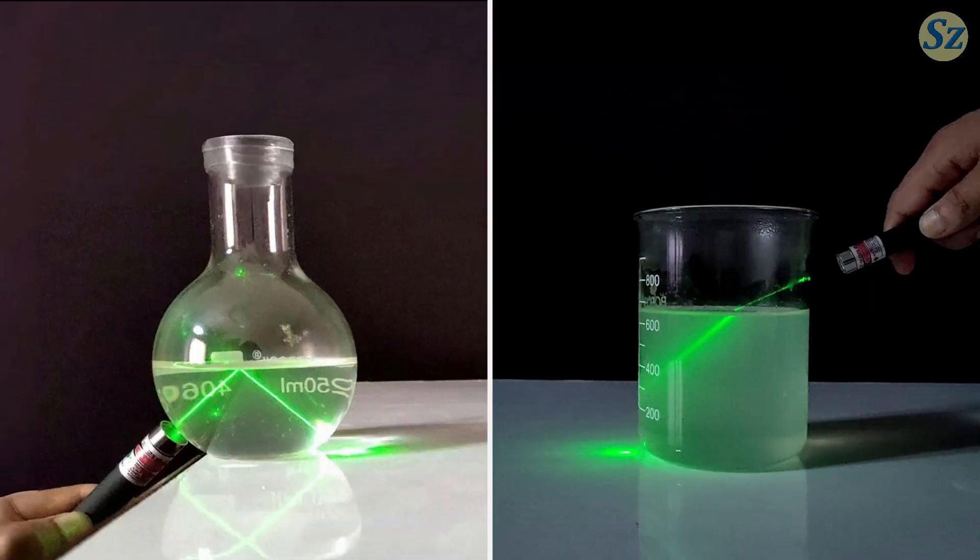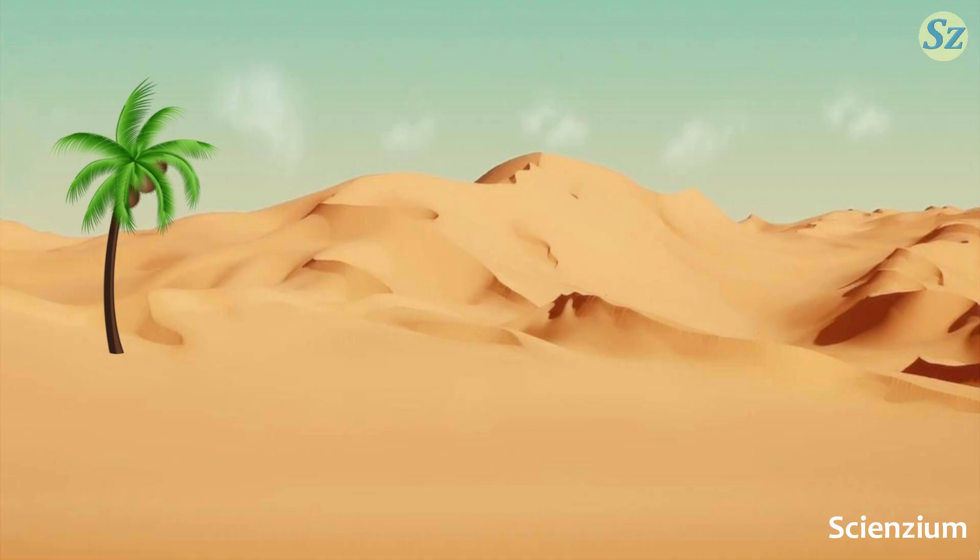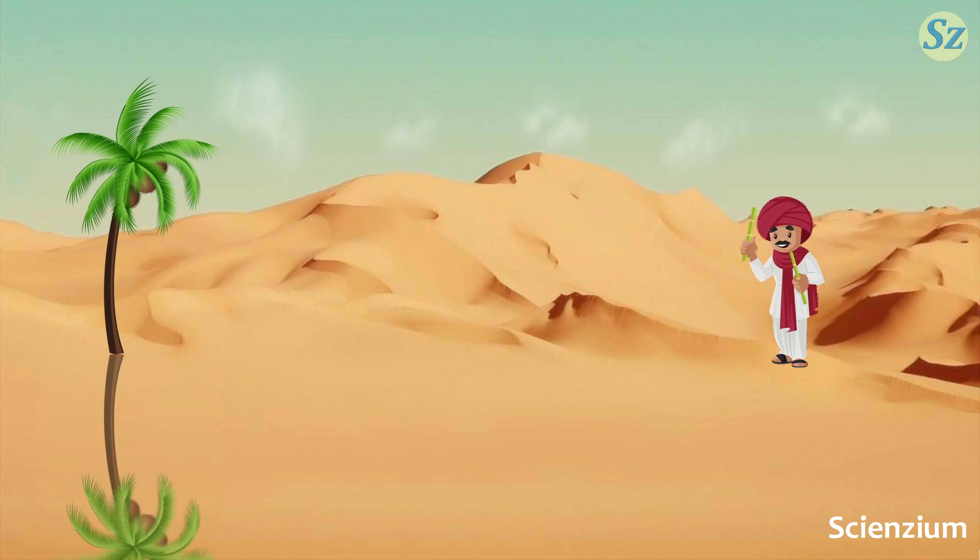Now let's see how these two optical phenomena create a mirage. Imagine a desert scenario. When we look at something at a distance, we sometimes see its image below. This makes us think that there is water.